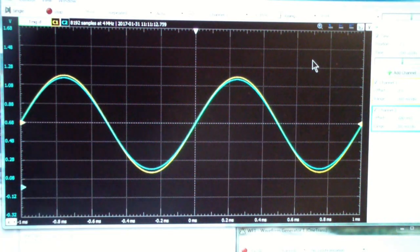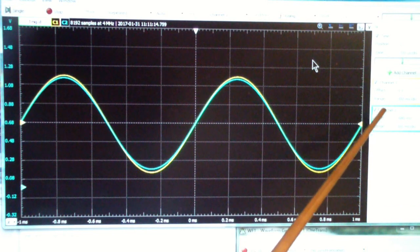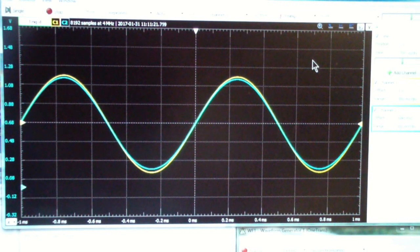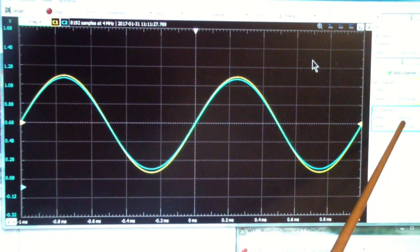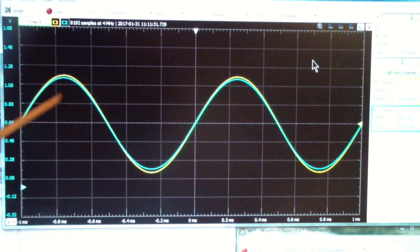Now in order to get the two traces to overlap, I had to set an offset on the analog discovery to make up for the emitter bias voltage, which is about 0.68 volts or about 680 millivolts. So over here the offset on channel two is set to minus 680 millivolts. That causes the two traces to lie on top of one another.